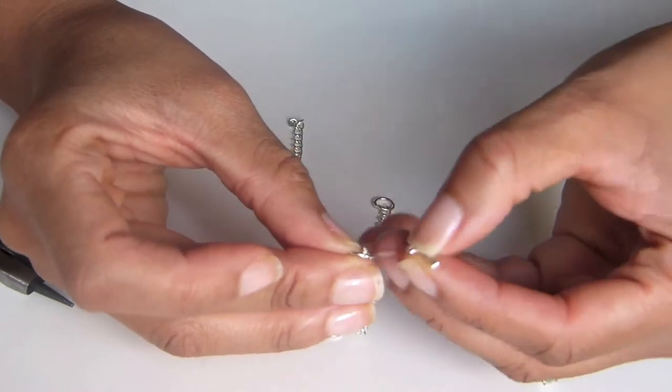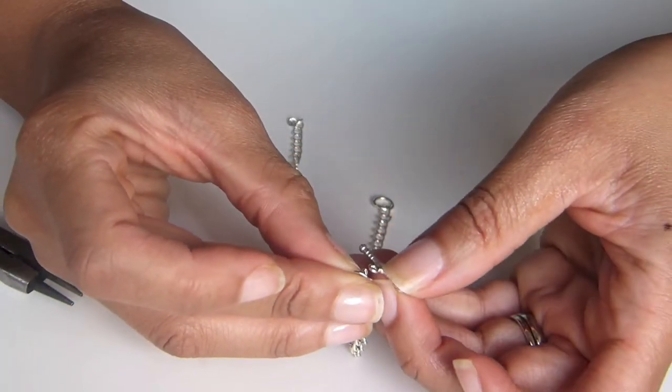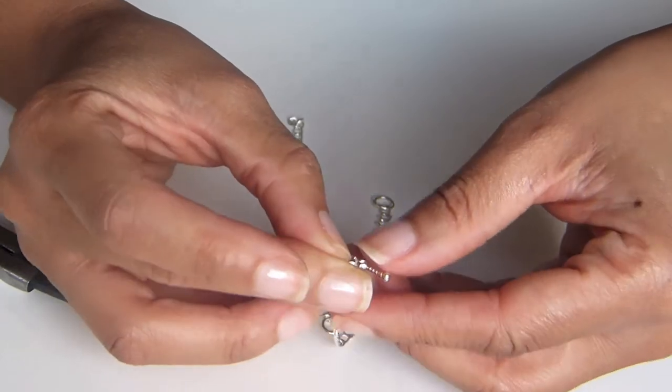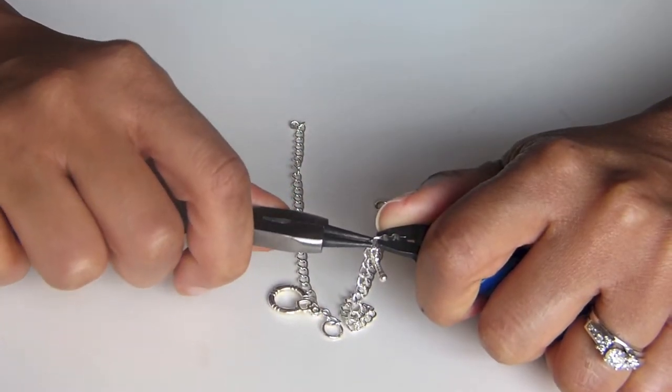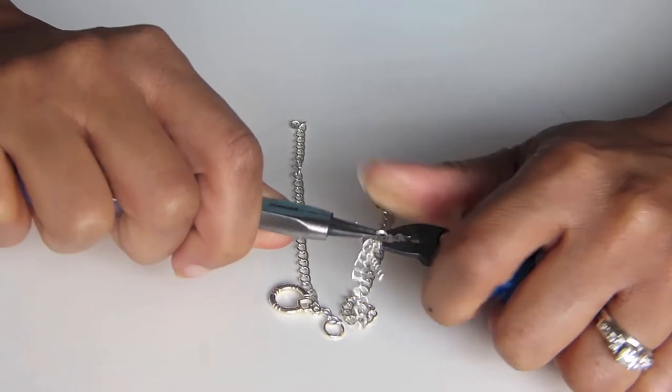You're going to take your closure and apply it onto this first jump ring. Once you have that on, you're going to seal it by just doing a twist and turn motion to close the jump ring.